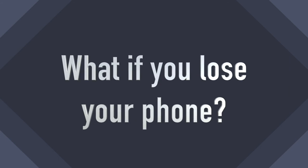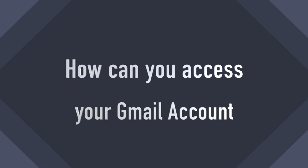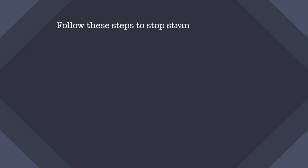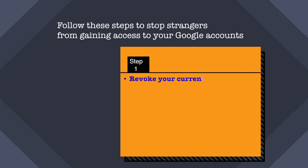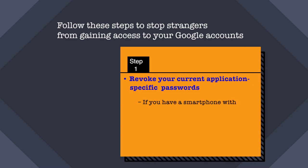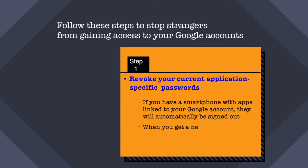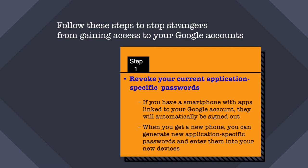What happens if you lose your phone and two-step verification is turned on? The first step is to revoke your current application-specific passwords. If you have a smartphone with apps linked to your Google account, they will automatically be signed out. When you get a new phone, you can generate new application-specific passwords as described previously, revisit those apps, and enter the new application-specific passwords on your new devices.